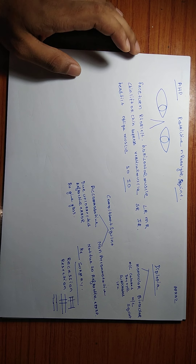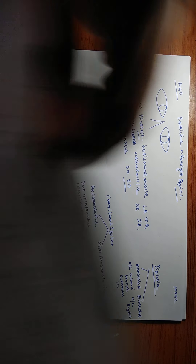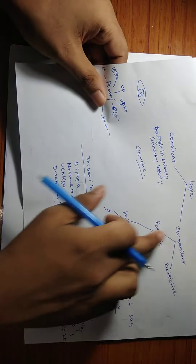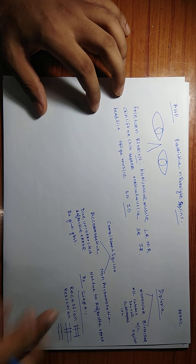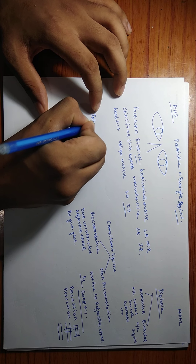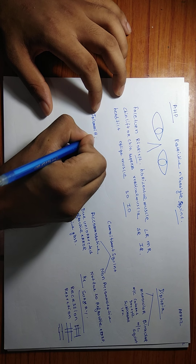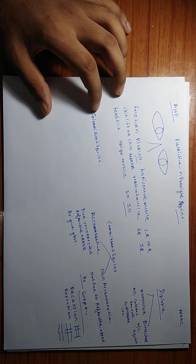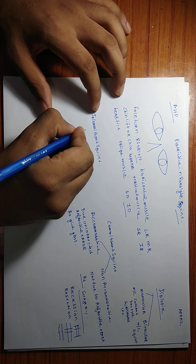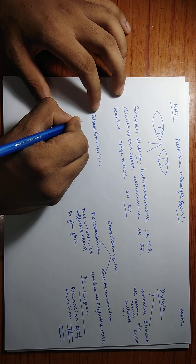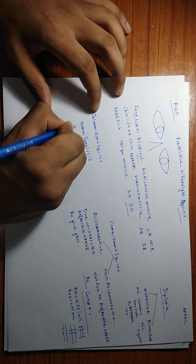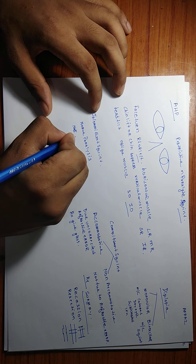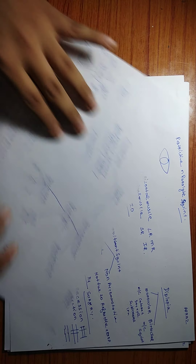Now let us go to incomitant squint. Incomitant squint includes paralytic and restrictive types. Incomitant squint is due to nerve paralysis, neuromuscular disorder — remember this carefully — or it can be restrictive.